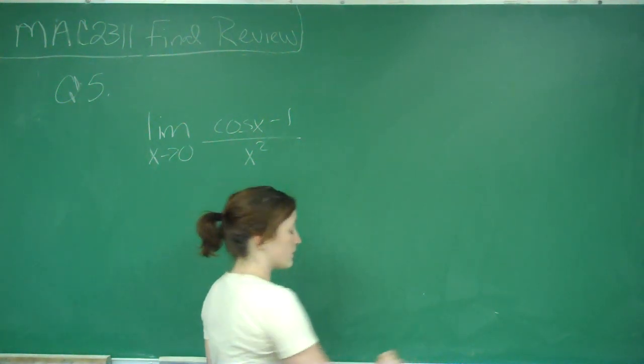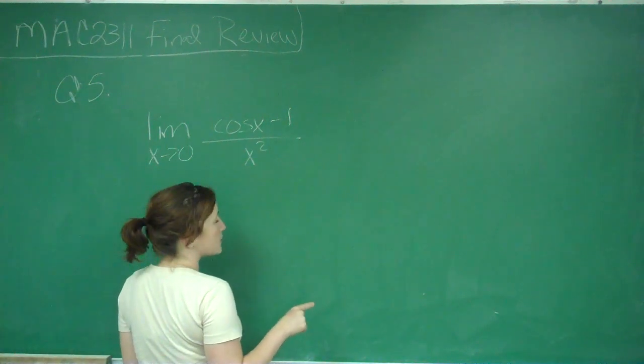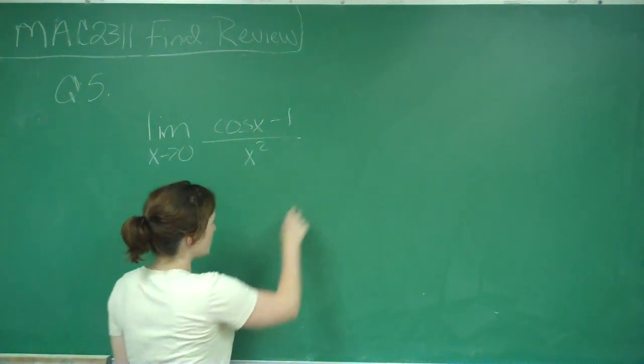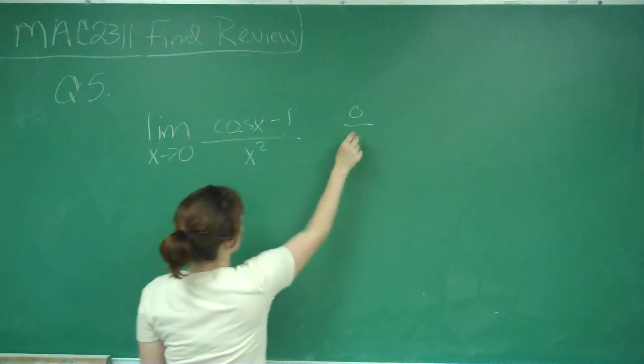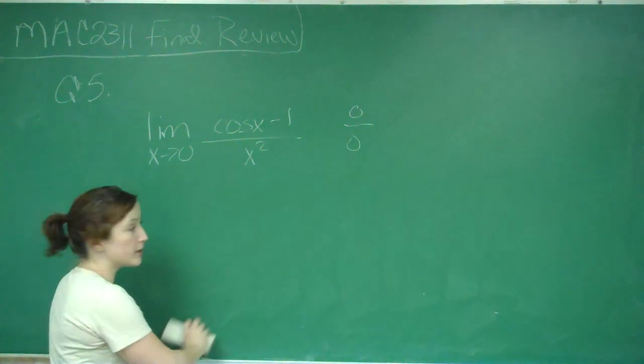The first step we always try is to plug in first. We do that, we get cosine of zero which is one, minus one, which is zero over zero squared, which is zero. So that as you can see is an indeterminate form.